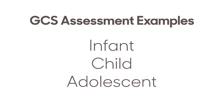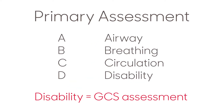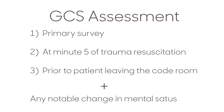The following are examples of how to perform a GCS assessment on an infant, child, and adolescent. The GCS is assessed during the primary survey. It should be reassessed at minute 5 of the trauma resuscitation and again prior to the patient leaving the code room. Additional GCS assessments should be done if there is a notable change in mental status.